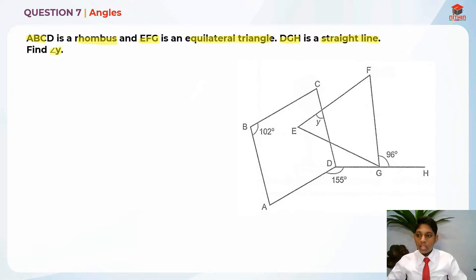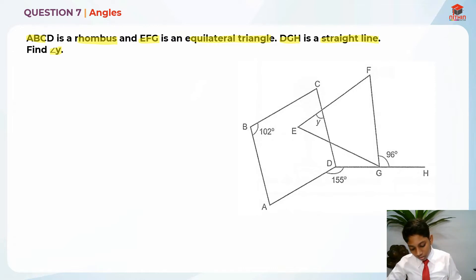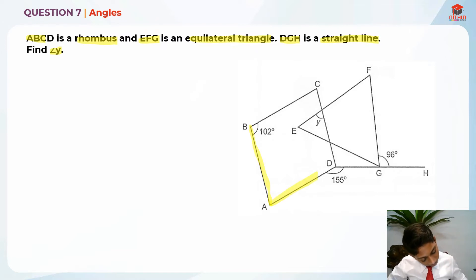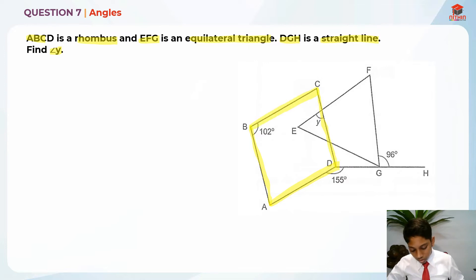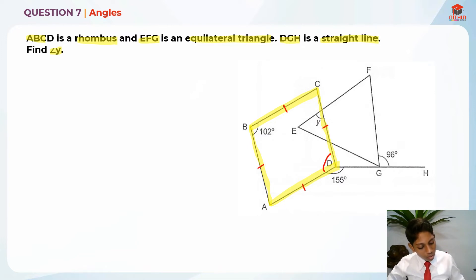They told us that ABCD is a rhombus. In a rhombus, all sides are equal and opposite angles are equal. So the angle 102 degrees over here will be 102 degrees on the opposite side as well.